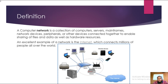A computer network is a collection of computers, servers, mainframes, network devices, peripherals, or other devices connected together to enable sharing of files and data as well as hardware resources. An excellent example of a network is the internet. The internet is the network of networks, which connects millions of people all over the world.